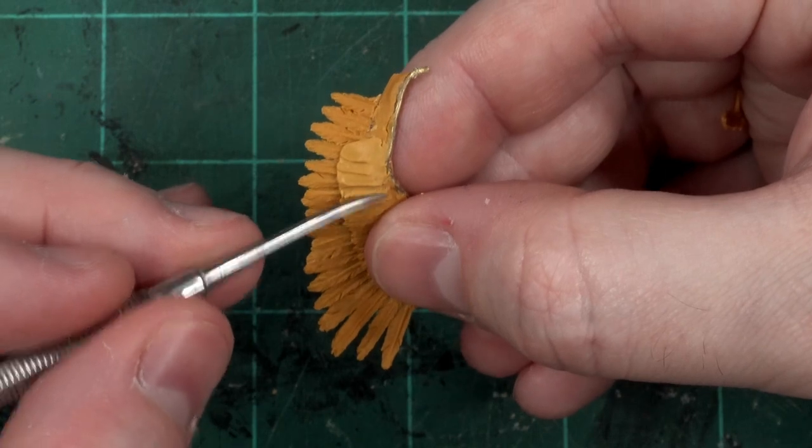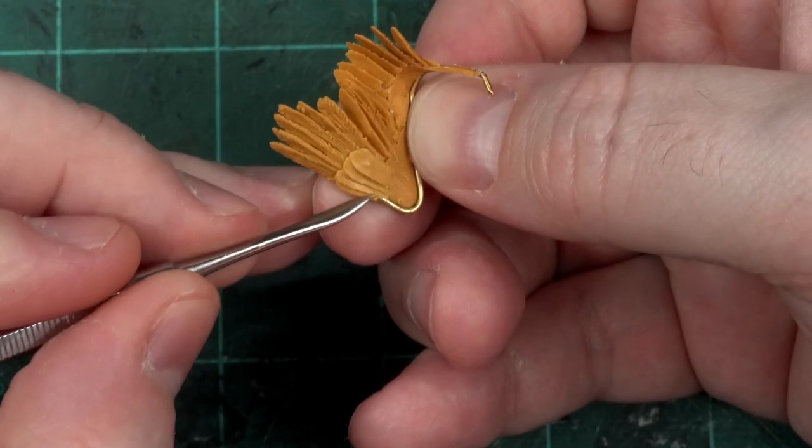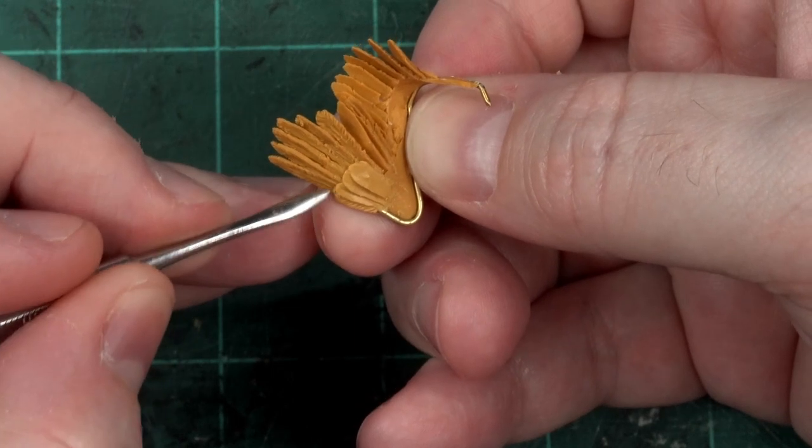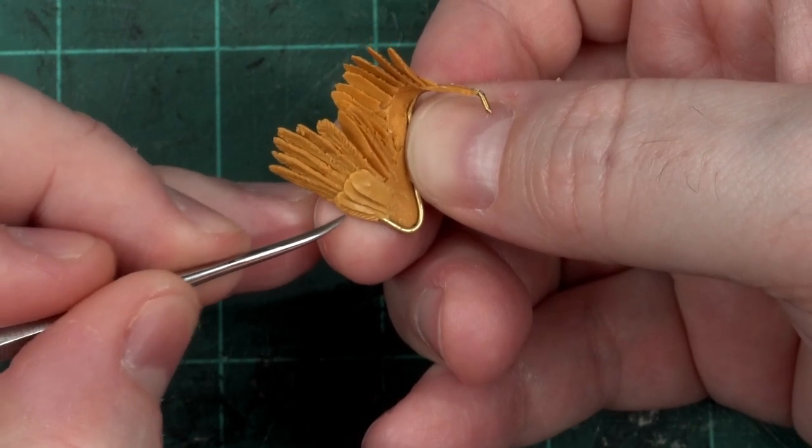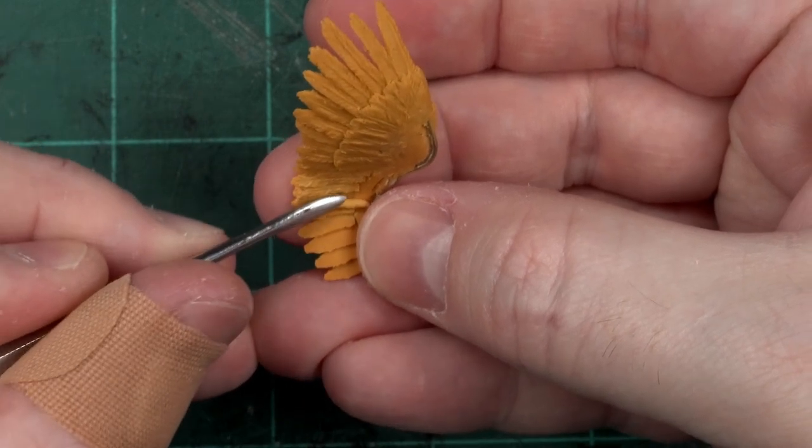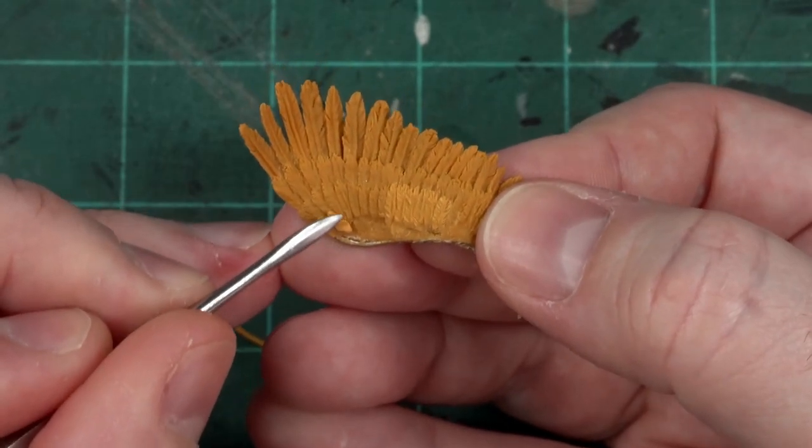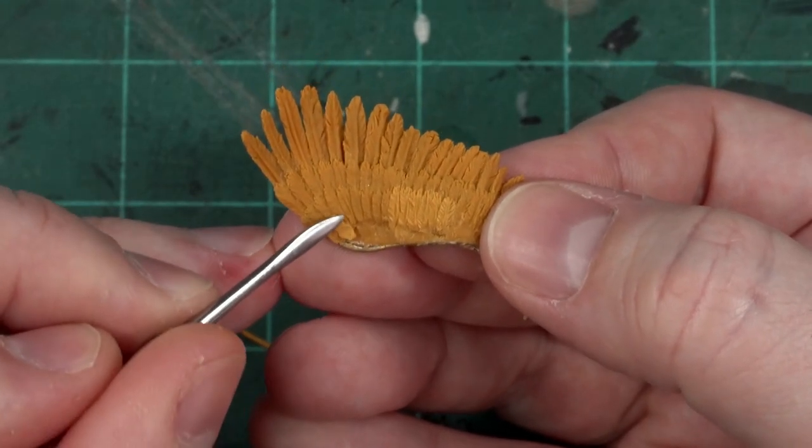This took me weeks, so I won't subject you to it all. I sculpted sections on each wing before baking them, switching between overwing and underwing.